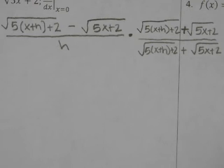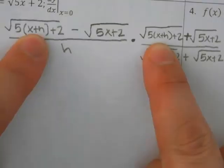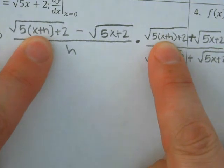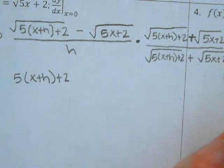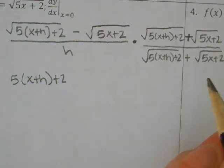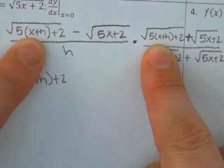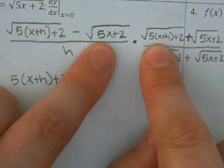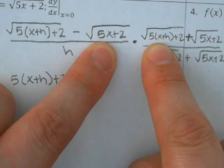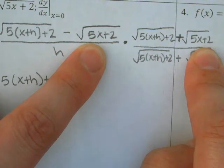So what do I do with the top? You're going to FOIL it. So the first square root times the first square root gives me 5 times (x+h) plus 2 — the two square roots cancel out completely and I just get what is underneath them. When I multiply the outsides I get the positive square root of one times the positive square root of the other. When I multiply the insides, I have the negative version of the exact same thing — those two things cancel out. And then when I multiply the last, I get negative square root of 5x+2 times positive square root of 5x+2, and what does that give me? Minus (5x+2).